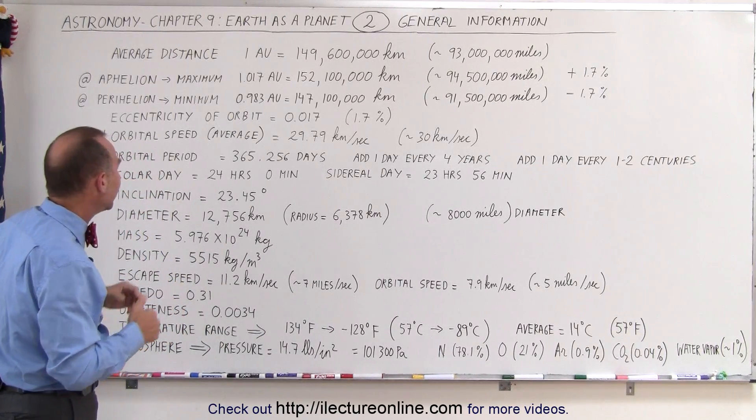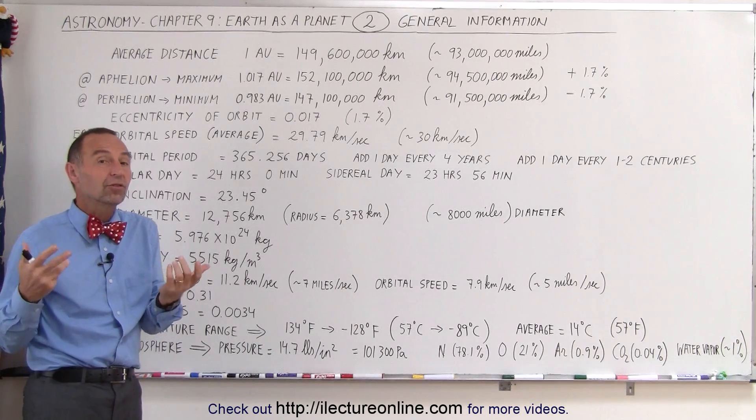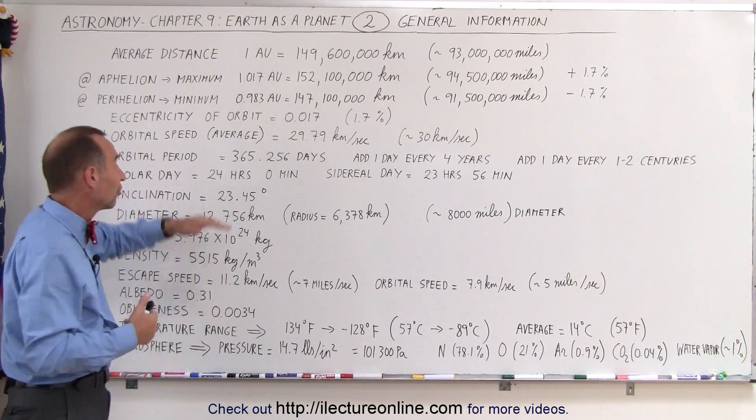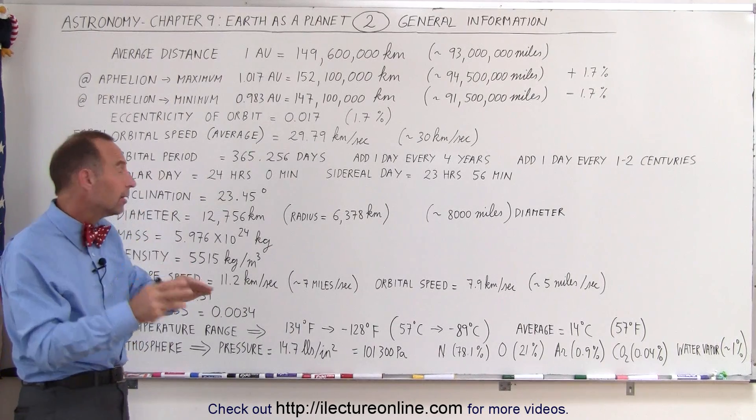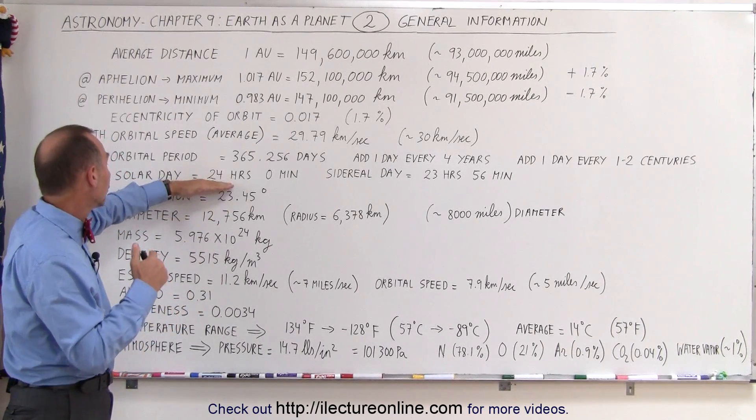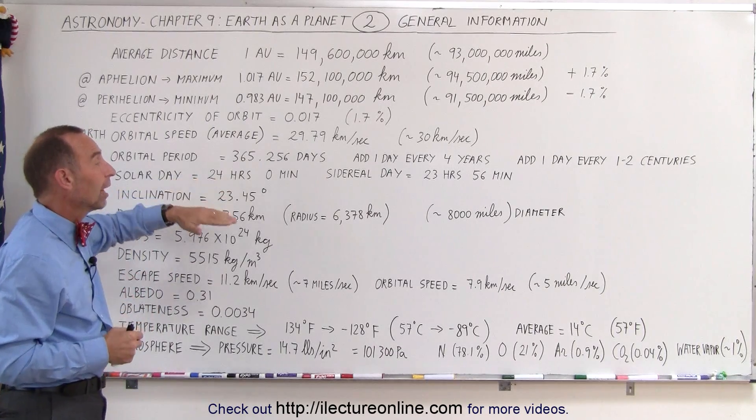Next, let's take a look at the length of the day. Now, we always know that the day lasts 24 hours, 0 minutes, 0 seconds. Well, that's called the solar day. That's relative to the Sun, the Earth, the average solar day is 24 hours.